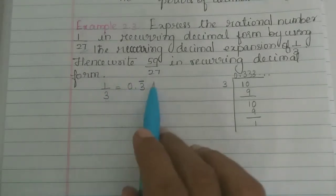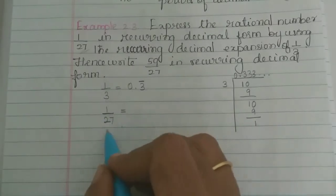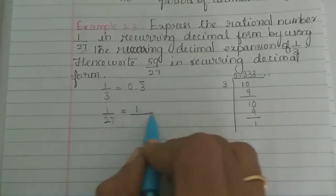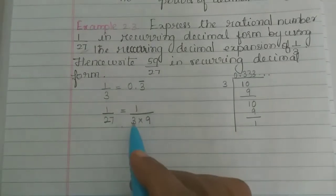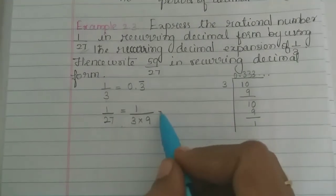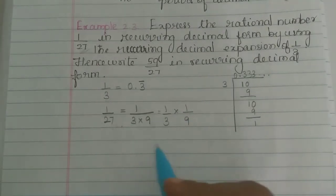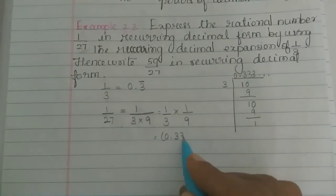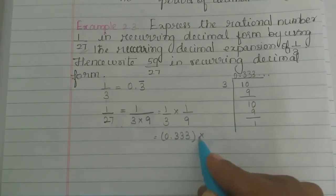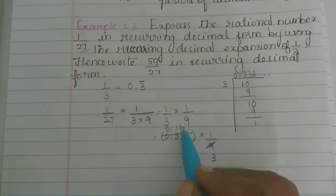Now using this value, we find 1 by 27 in recurring decimal form. Since 27 equals 3 times 9, we can write 1 by 27 as 1 by 3 multiplied by 1 by 9. We know 1 by 3 equals 0.3 bar, which is 0.333... So 0.333... divided by 9 gives us 0.111... divided by 9.